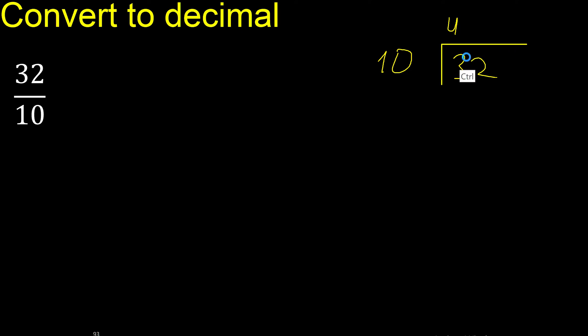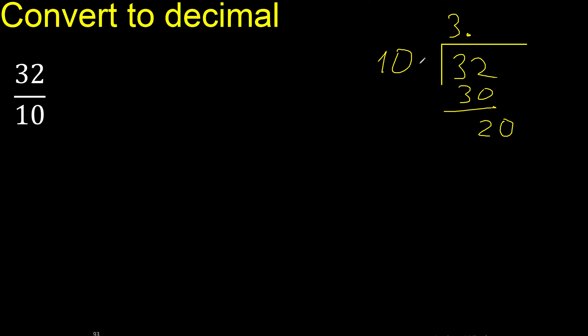Multiply by 4 is 40, which is greater. Therefore multiply by 3 is 30, subtract gives 2. There is no more digit to bring down, so complete with 0 and a decimal point — now we have 20. Multiply by which number is nearest to 20 but not greater: multiply by 2 is 20 exactly, subtract gives 0. Finish.